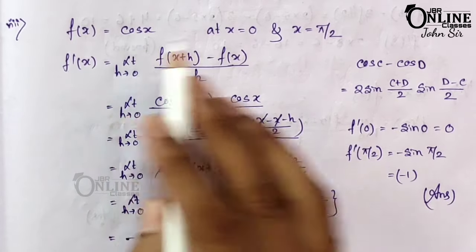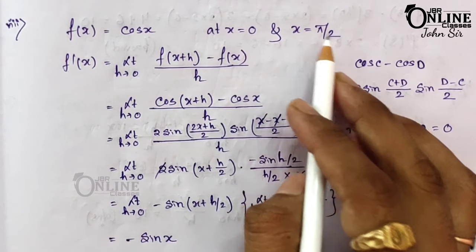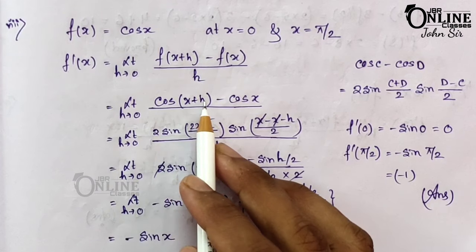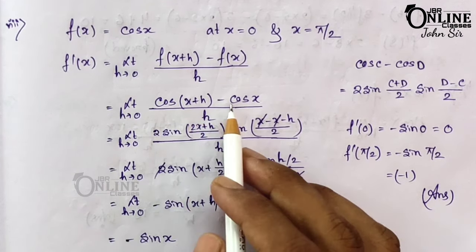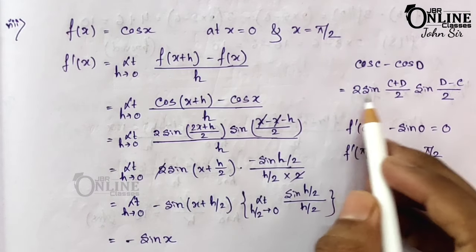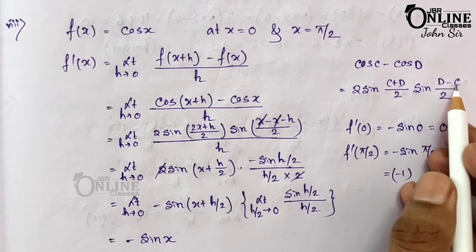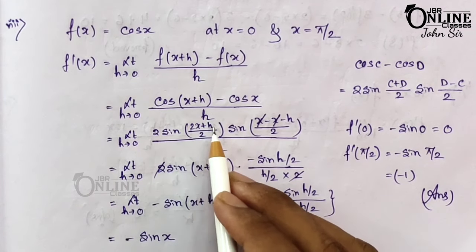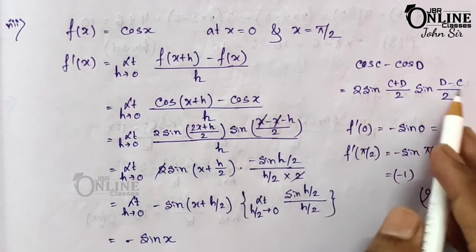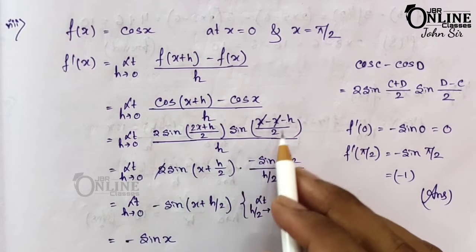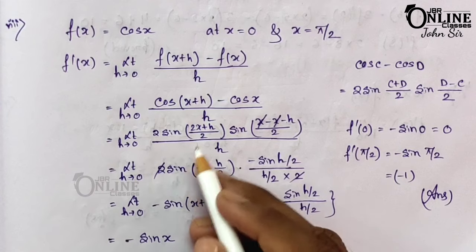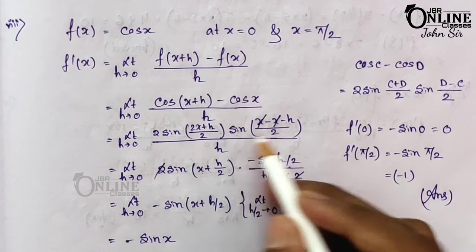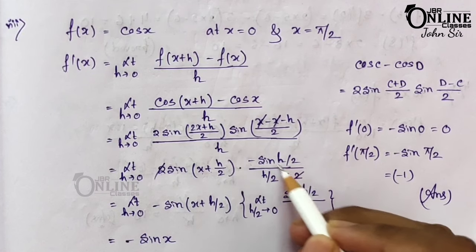Sum number 8: f(x) = cos x, at x = 0 and x = π/2. So f'(x) = limit h→0 of [cos(x+h) - cos x] / h. Using the formula cos C - cos D = -2 sin((C+D)/2) sin((C-D)/2), this becomes -2 sin(x + h/2) · sin(h/2), with the factor arranged as -2 sin((2x+h)/2) · sin(-h/2), giving a negative sign.